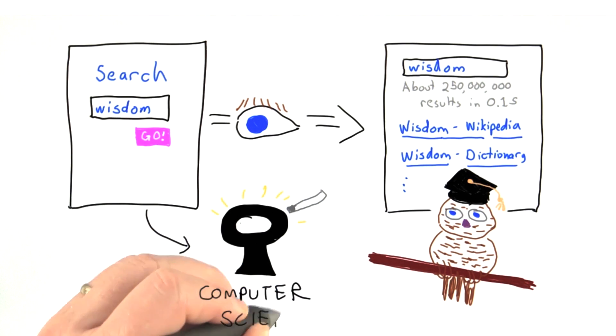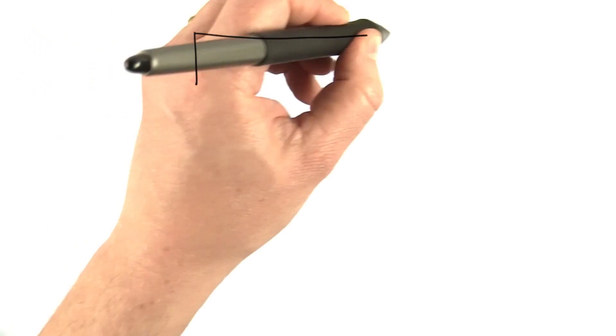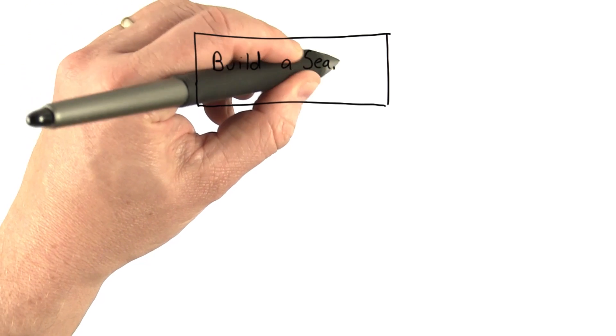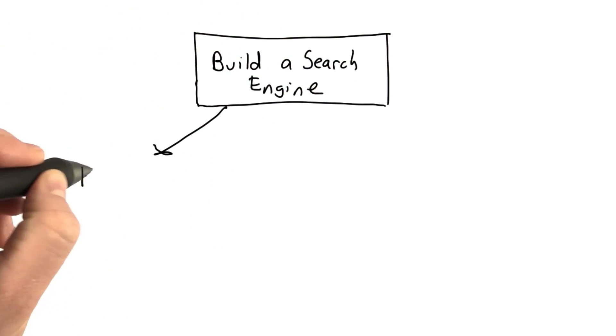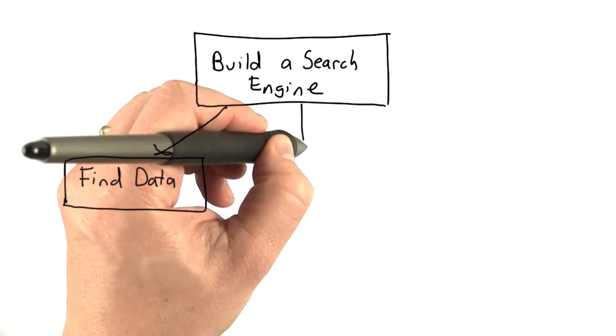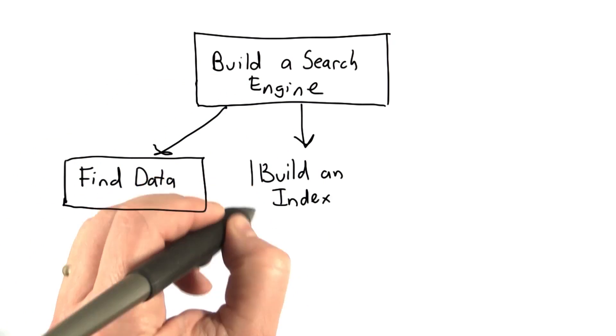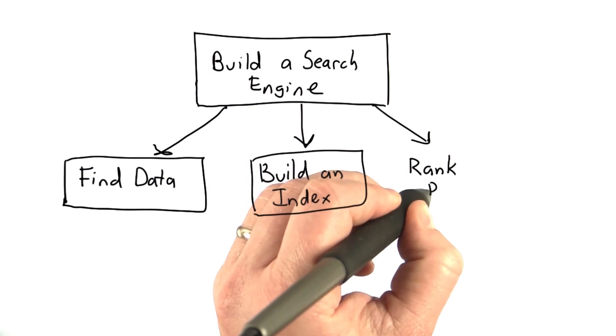Our biggest goal, though, is to learn about computer science. Computer science is about how to solve problems, like building a search engine, by breaking them into smaller pieces, and then precisely and mechanically describing a sequence of steps that you can use to solve each piece. And those steps can be executed by a computer.